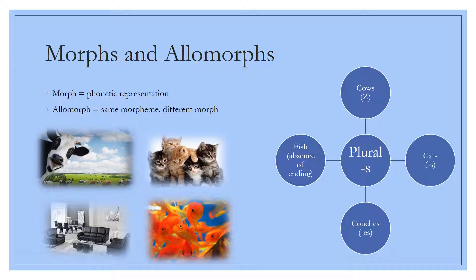Here we are going to see how phonetics and morphology intertwine to create morphs and allomorphs. Morphs are the way that a morpheme sounds when it is spoken aloud. Allomorphs are morphs which carry the same morpheme meaning but sound differently when applied to certain words. For example, the morpheme for plural is s. However, that morpheme or morph looks and sounds different for the words cows, which creates a z sound, cats, which is just the regular s sound, couches, which is es, and fish, which completely excludes the s.